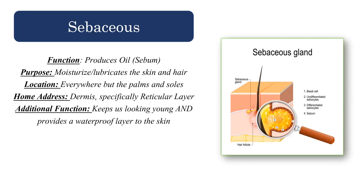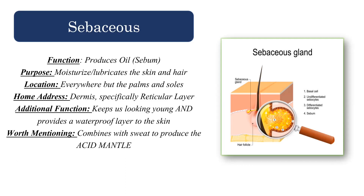Additional functions of the sebaceous gland, besides keeping us looking young, include providing a waterproof layer to the skin. We don't want rain going into our body, so the sebaceous gland provides a light film of oil on our skin to protect us. It also combines with the sweat from the pseudoriferous glands to produce something called the acid mantle — a transparent layer that lays on our skin.